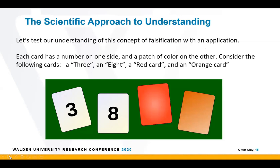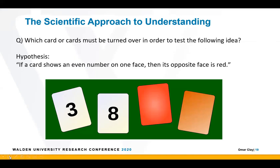To test our understanding of falsification, let's consider the Wason selection task. We have cards — each has a number on one side and a color on the other, either red or orange. The hypothesis: if a card shows an even number on one face, then its opposite face is red. Which card or cards must be turned over to test this idea? Let's walk through: the number 3 — a few people think we should flip it. But if we flip the 3 and find a red face, we haven't falsified the hypothesis because 3 is odd — our hypothesis doesn't apply.